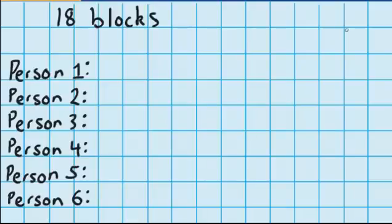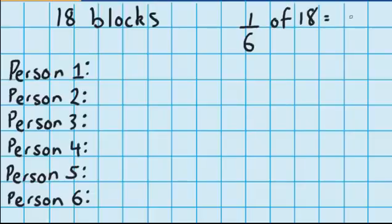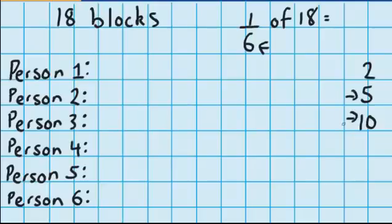Let's try one more question, but this time we're not going to use any materials. I've got 18 blocks and I want to share them between 6 people, so I'm trying to find what 1 sixth of 18 is. I'm good at skip counting in 2's, in 5's, and in 10's. I need to take 6 jumps and I want to get to 18, so if I choose to jump up in 5's or 10's I'm going to go far too far past 18. So I'm going to choose to skip count in 2's and give 2 blocks to every person.